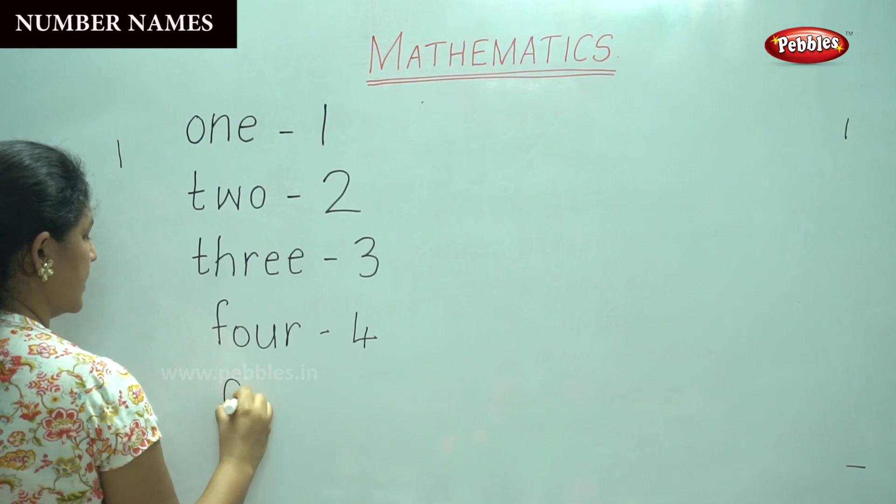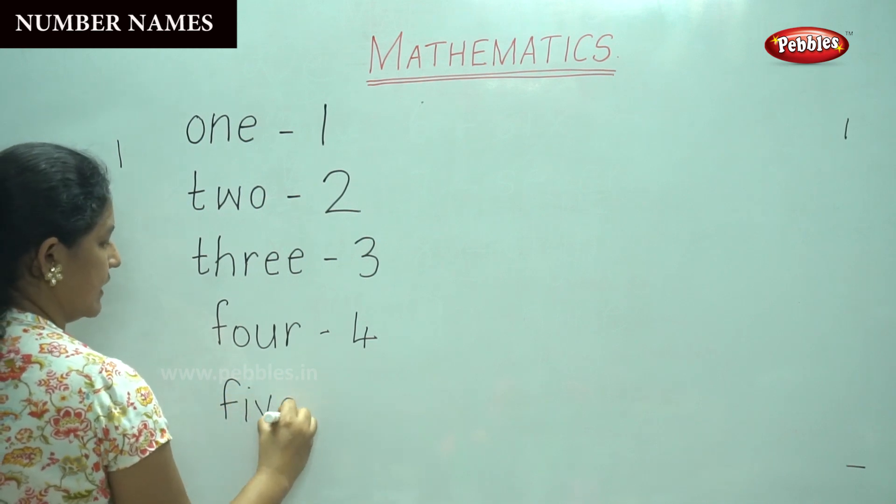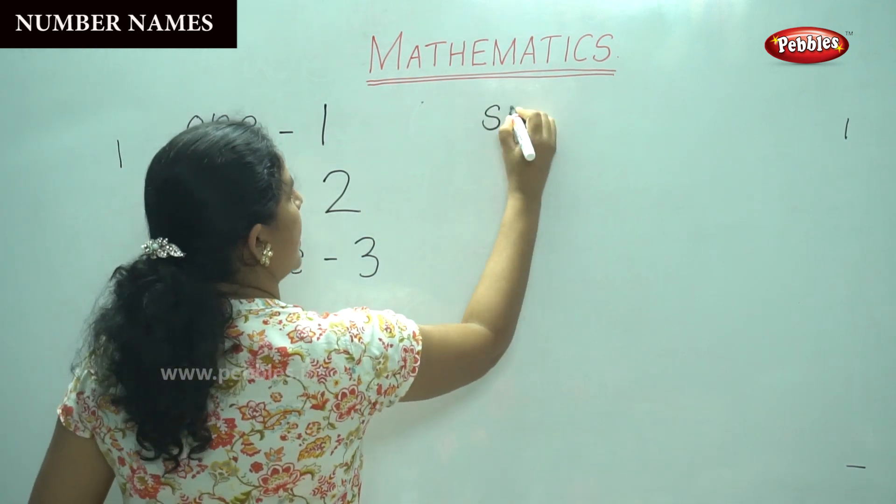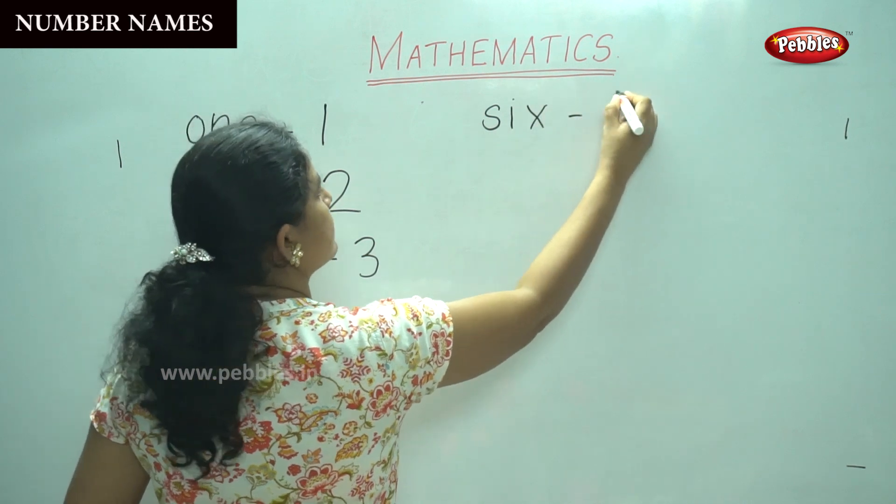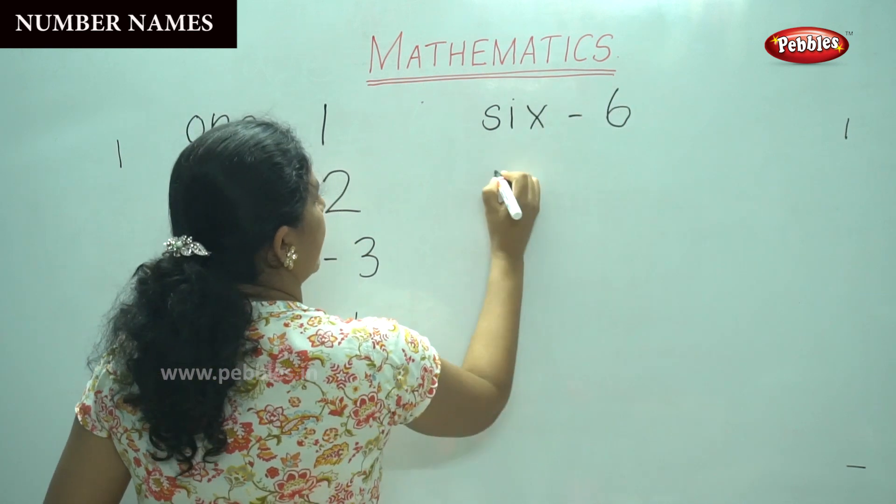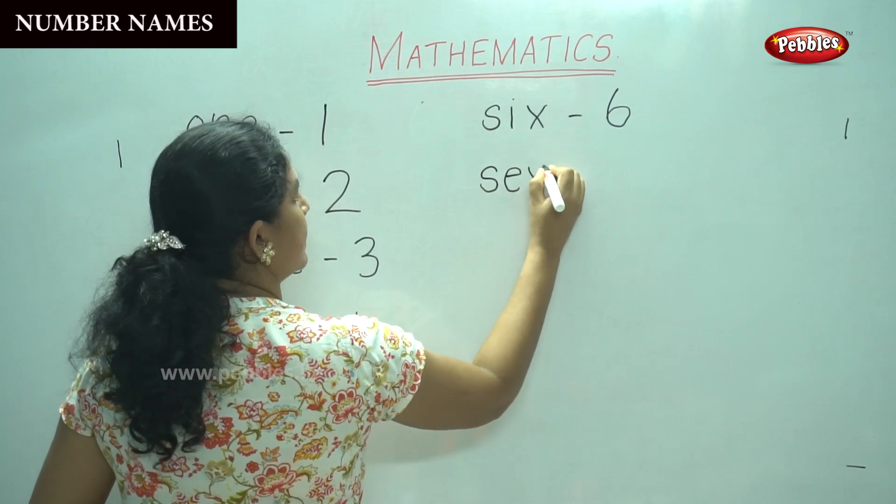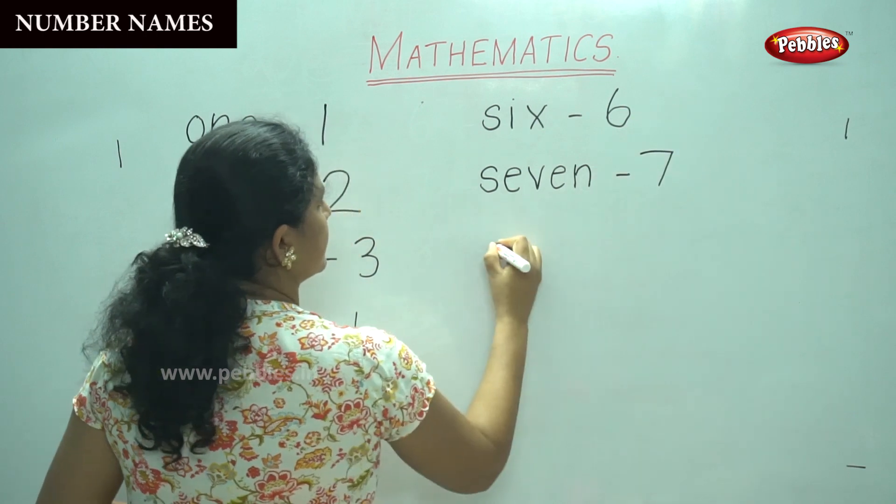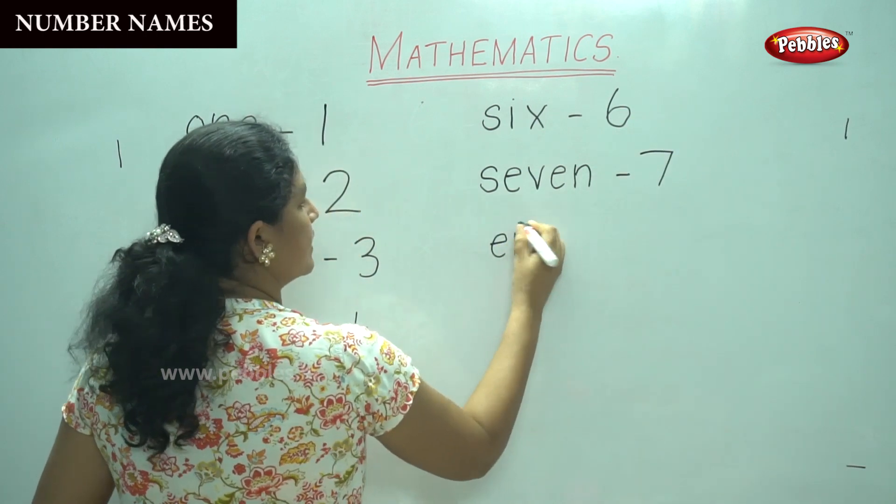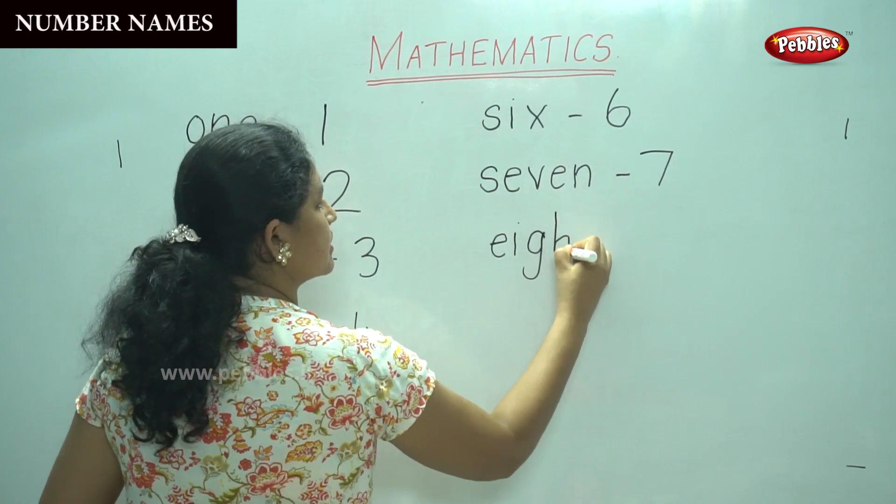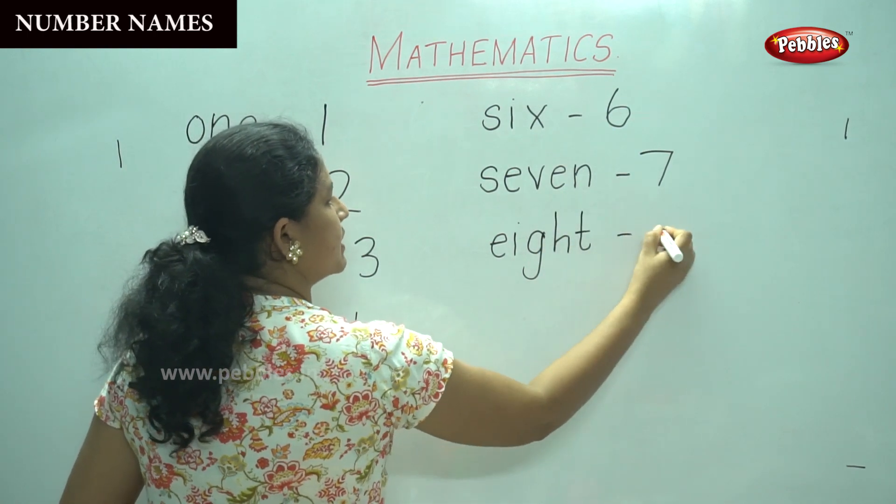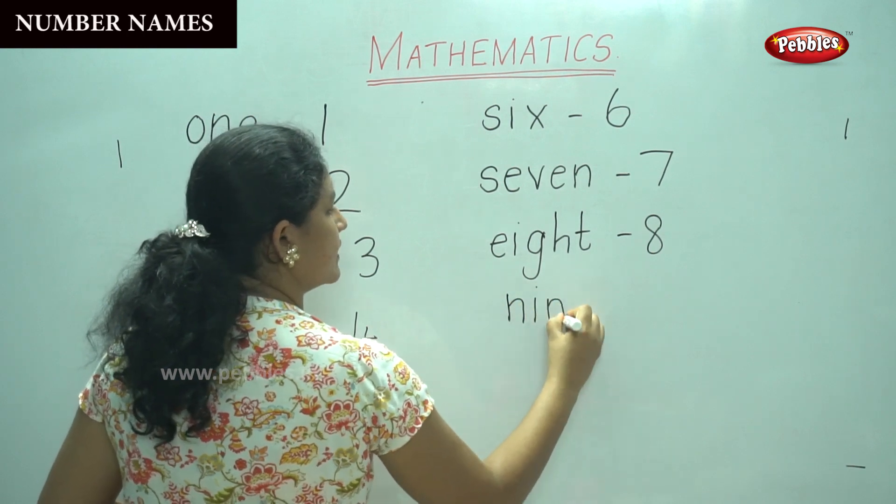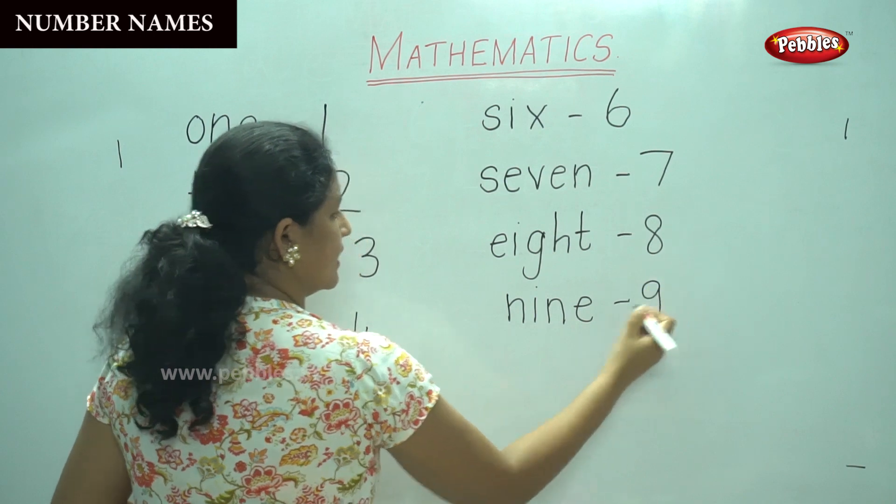F-O-U-R, number 4. F-I-V-E, number 5. S-I-X, number 6. S-E-V-E-N, number 7. E-I-G-H-T, number 8. N-I-N-E, number 9. And the last number, T-E-N, 10.